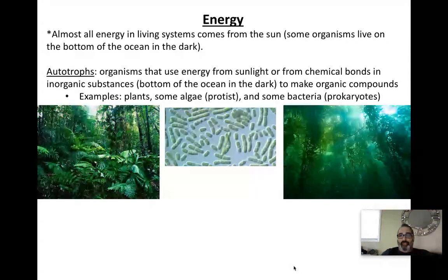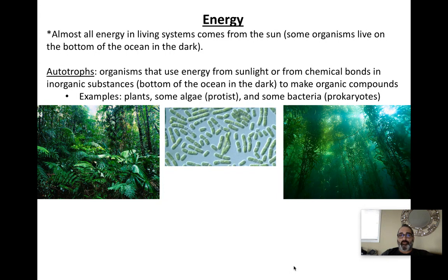The reason I say almost all is there are organisms that live on the bottom of the ocean and they can produce food without sunlight. So there is an exception to that rule. Some organisms at the bottom of the ocean in the dark do this process called chemosynthesis. It's a little different than photosynthesis. Photosynthesis uses photo — light — while chemo means the bottom-of-the-ocean organisms use chemicals for the synthesis or production of their food.